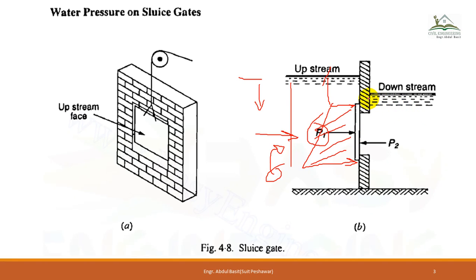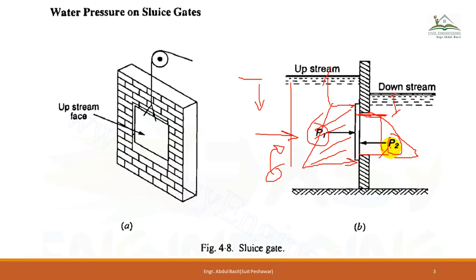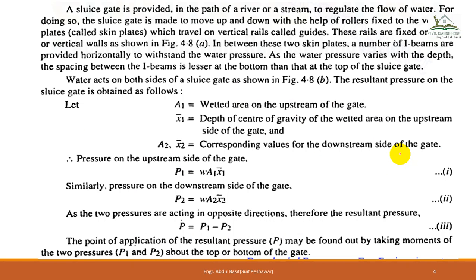If the downstream side also has some water, its top surface will be at a different level, and the pressure there will be due to that height only — so only H will differ. The pressure distribution on the downstream side will again be trapezoidal, giving P2 located at the centroid of that trapezoid. The net resultant pressure will be P1 minus P2.